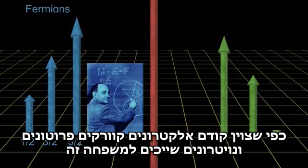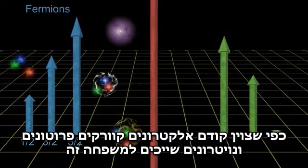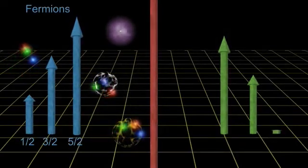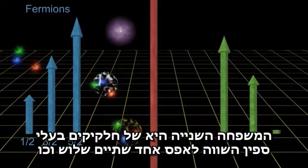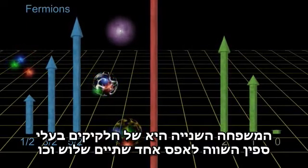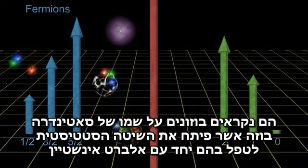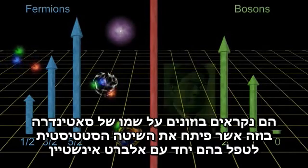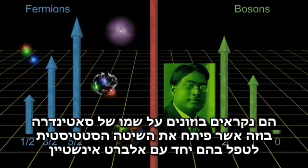As indicated, electrons, quarks, protons, and neutrons are all in the fermion family. The other family of particles have spin equal to zero, one, two, three, and so on — they are called bosons, after Satyendra Bose, who along with Einstein developed the statistics for dealing with this family.